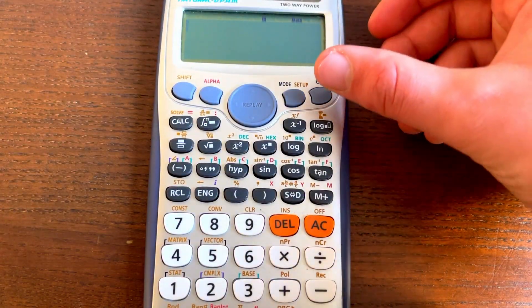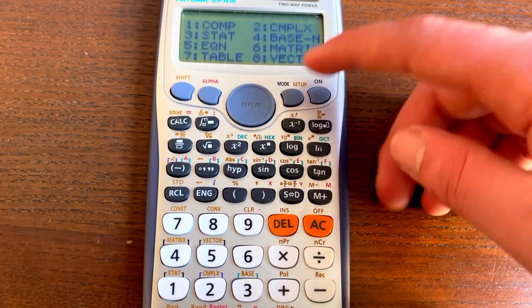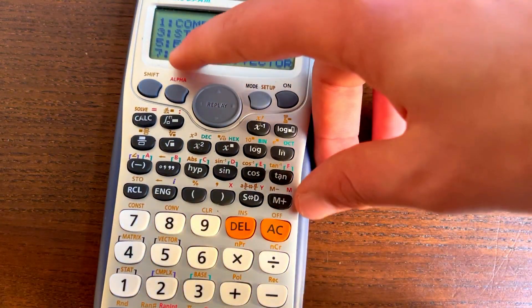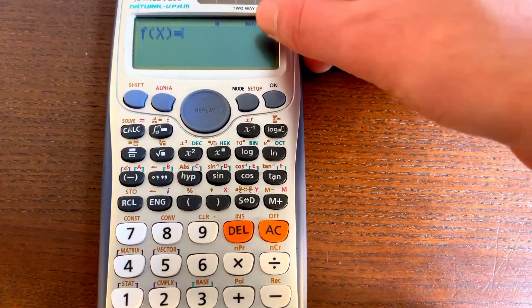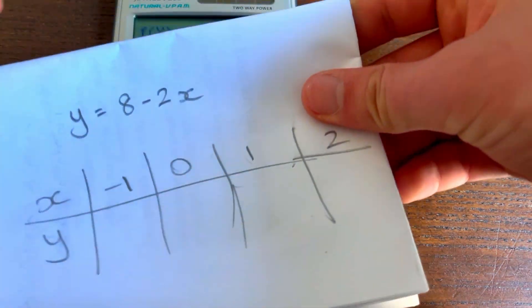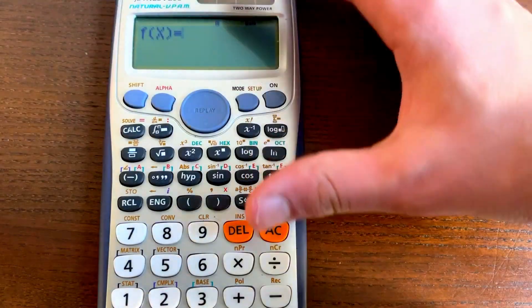So what we can do is we can get our calculator out, and we can actually do it much faster. So if you click mode setup right here, and then we click 7, which is table, right there, we get given fx equals, and we can now write in our equation, so the one right up here, you can write that in.